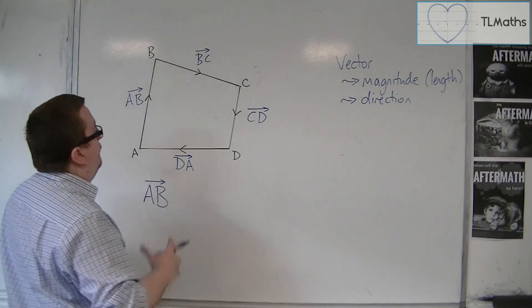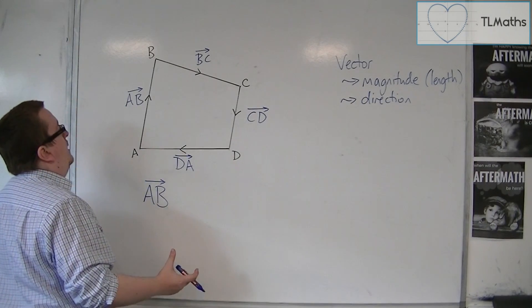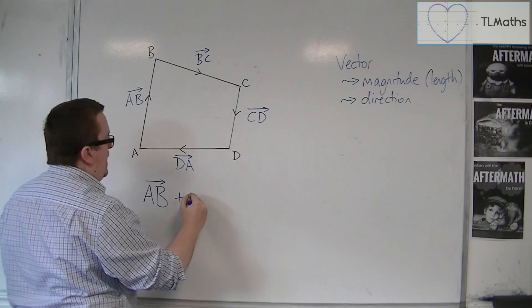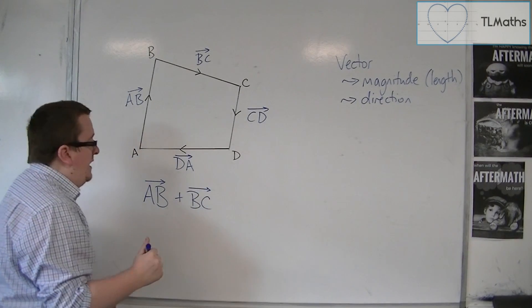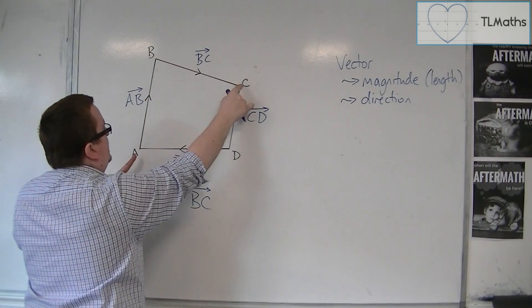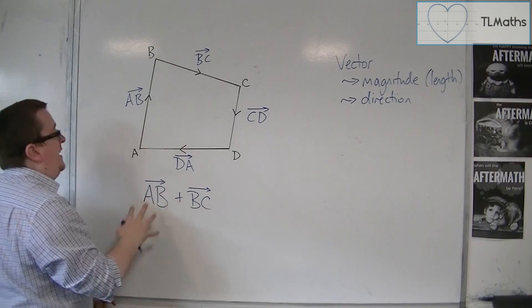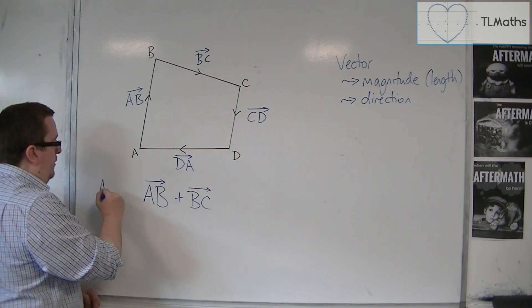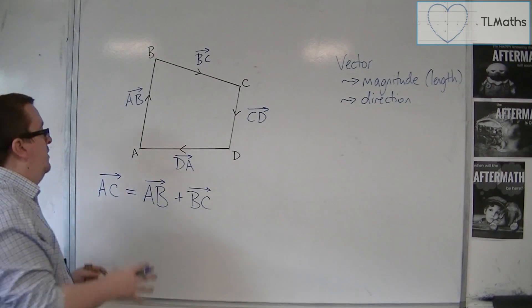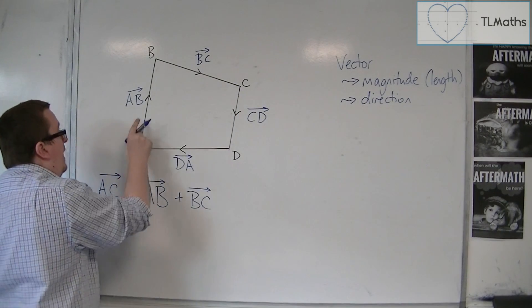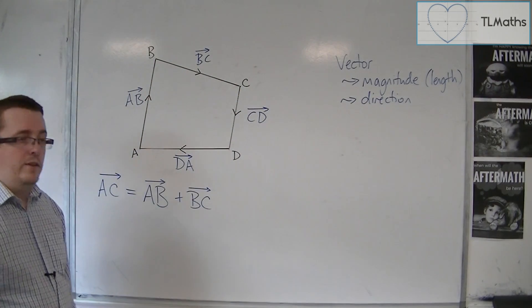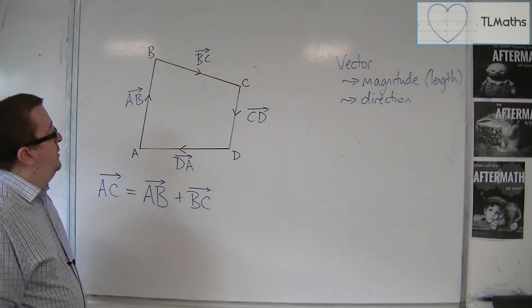So if I was, for example, going to add these up, you can add vectors together. What this is telling you is to go from A to B and then from B to C. So this tells you how to get from A to C. To get from A to C, I've got to go along AB, and then I've got to go along BC.